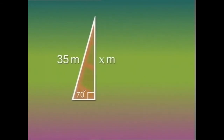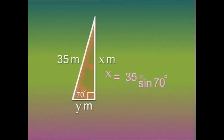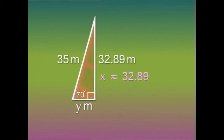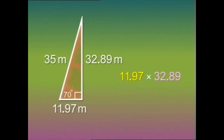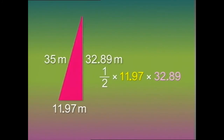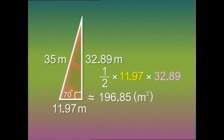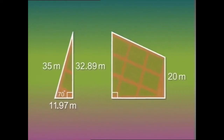For the right angle triangle, we'll take the side opposite to this angle to be x meters long and the adjacent side y meters long. The ratio of x to 35 is the sine of 70 degrees, so x equals 35 times sine 70° which is roughly 32.89. Similarly, y equals 35 times cosine 70° which is roughly 11.97. So the area of the triangle equals 11.97 multiplied by 32.89 divided by 2, roughly 196.85 square meters.